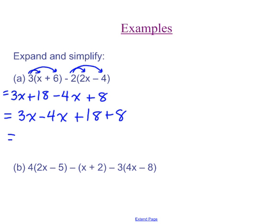And finally, I'm going to simplify. 3X's take away 4X's is negative 1X. Remember, you don't have to put the 1 in front. And 18 plus 8 is positive 26. Now that is my final answer because I no longer have like terms.